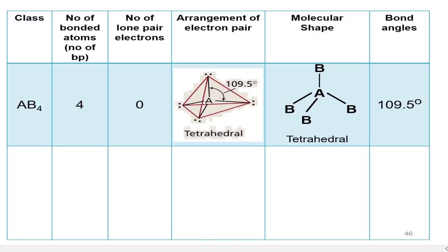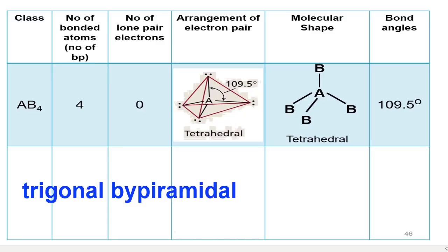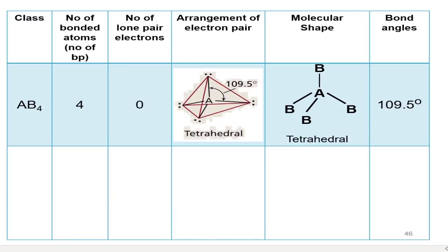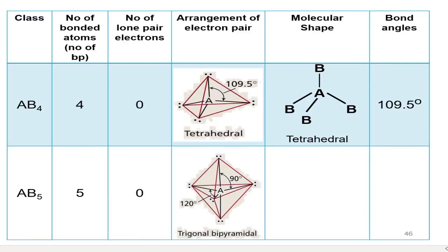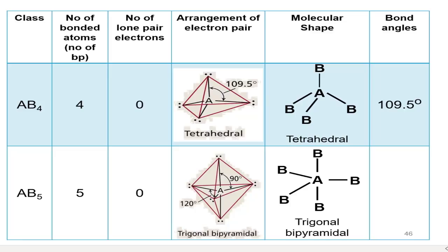The next shape is trigonal bipyramidal, with a class of AB5, meaning there are five electron pairs around the central atom. There are two bond angles: the first one is 90° and the other is 120°. This describes the positions of electron pairs around the central atom for trigonal bipyramidal.